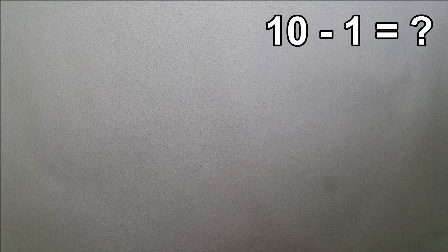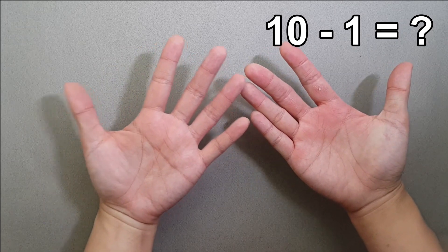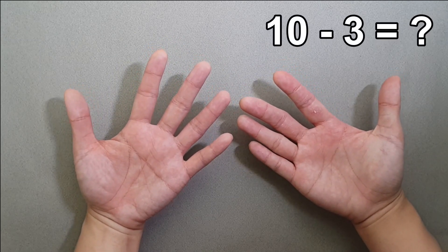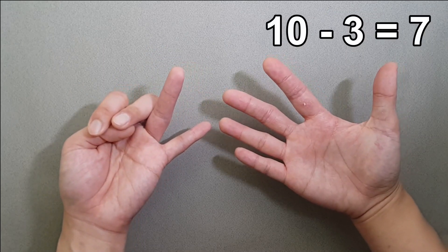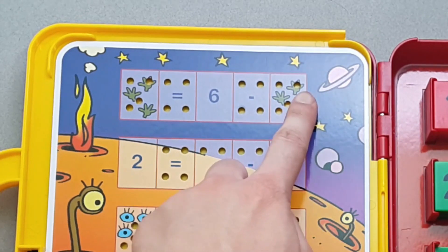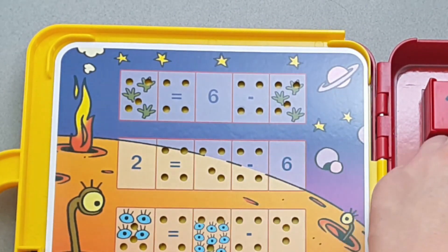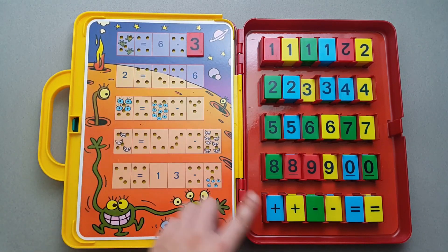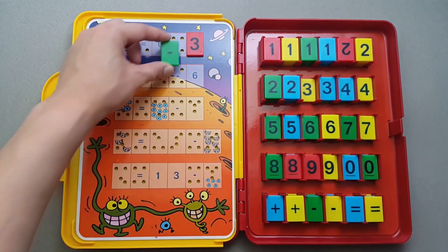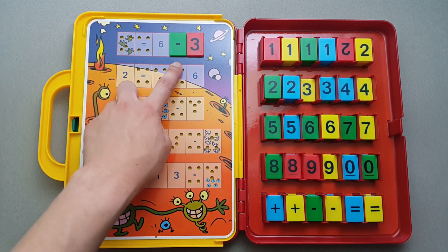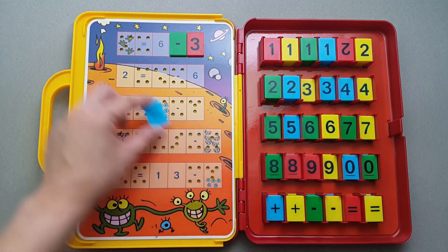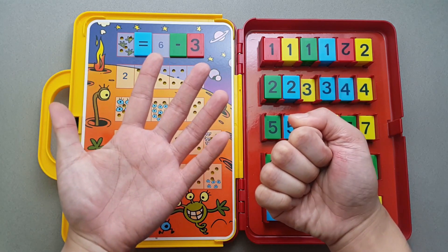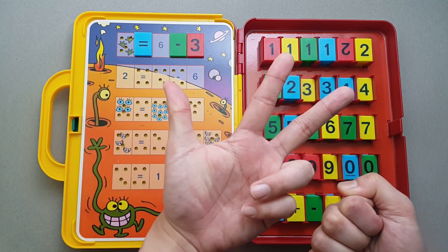What is 10 minus 1? 10 fingers minus 1 equals 9. So 10 minus 1 equals 9. What is 10 minus 3? 10 fingers minus 3 equals 7. So 10 minus 3 is 7. 6 minus 3. 6 fingers minus 3 equals 3. So 6 minus 3 is 3.